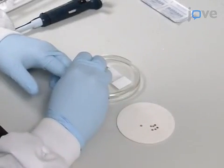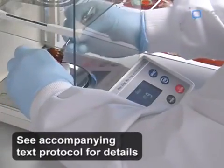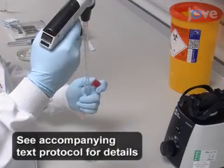To begin, prepare the EM grids using the carbon sheet method and prepare the negative staining reagents as described in the accompanying text protocol.